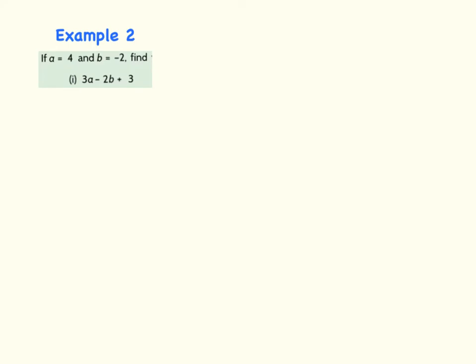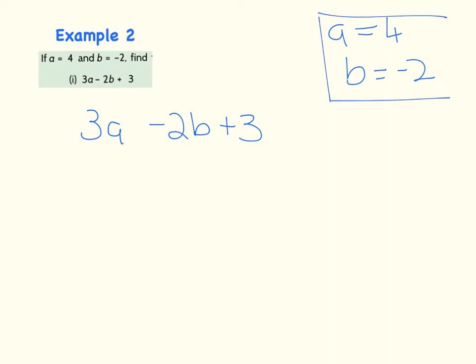Example 2 here. If a is equal to 4 and b is equal to minus 2, find 3a minus 2b plus 3. So I'm going to just write that out. So 3a minus 2b plus 3. And in the corner I'm going to write, a is equal to 4 and b is equal to minus 2.